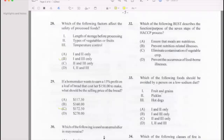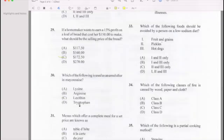Number 30: Which of the following is not an advantage of mayonnaise? Answer is C.